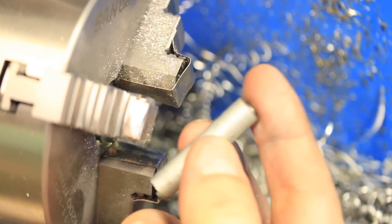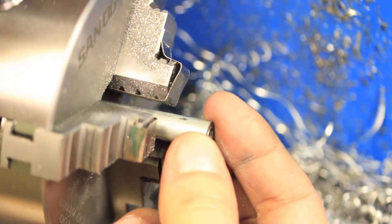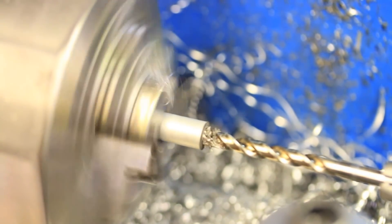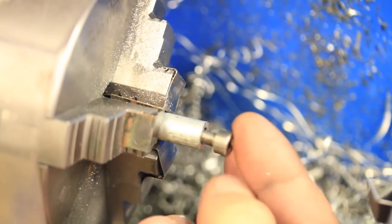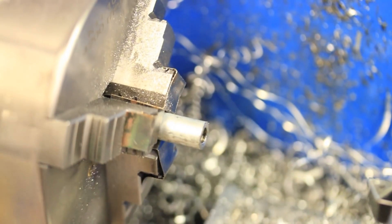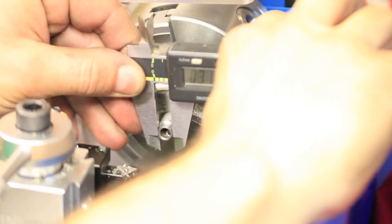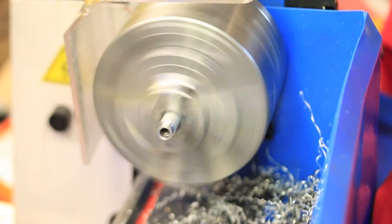To make the bushing, I'm just using this small piece of steel that I found that seems to be the right size. Any sloppiness here won't matter because when it's tightened down, the bushing won't move relative to the bolt.